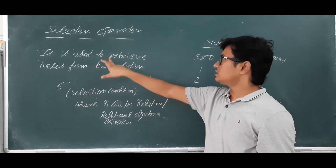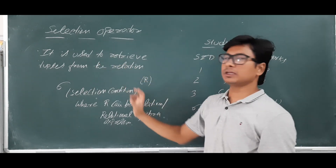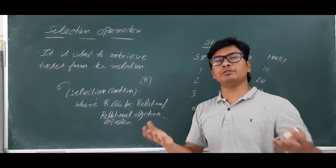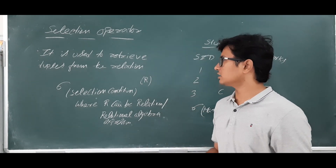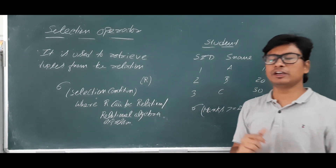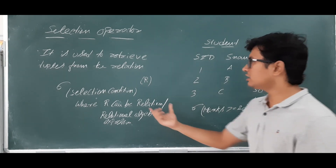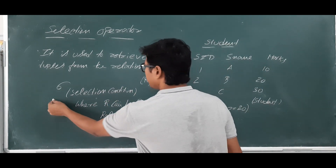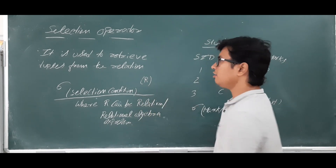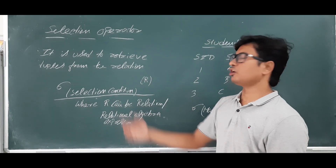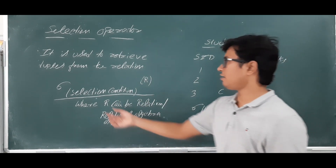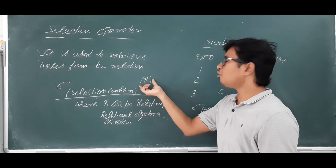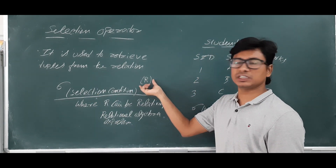The selection operator retrieves tuples from the relation — it can retrieve some of the tuples or all the tuples. When we want to retrieve some tuples, we use a condition. This is the basic way of using the selection operator: you have the selection operator, a selection condition, and the relation on which you want to apply the condition.